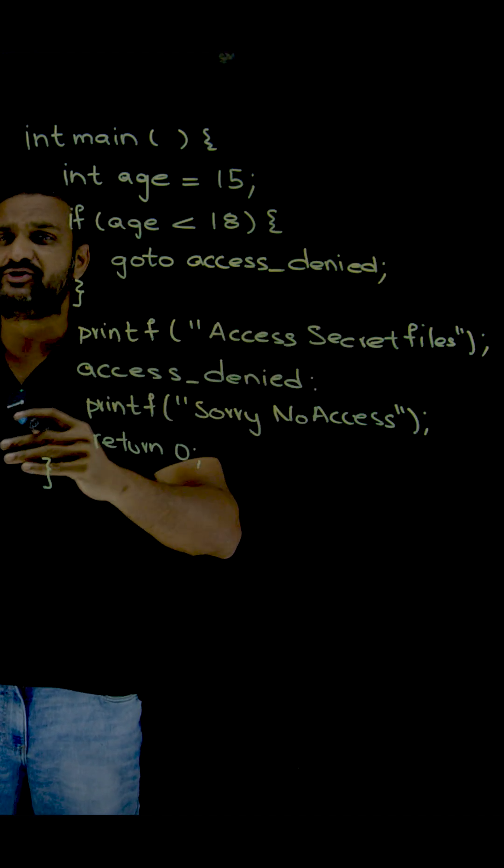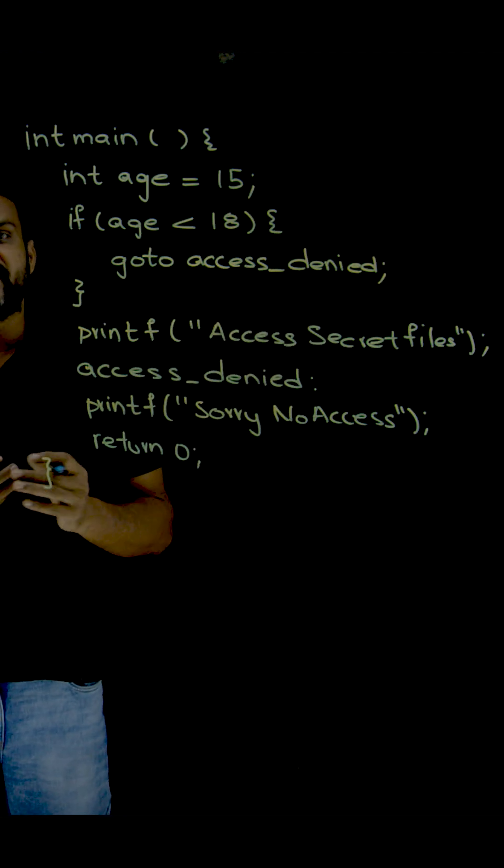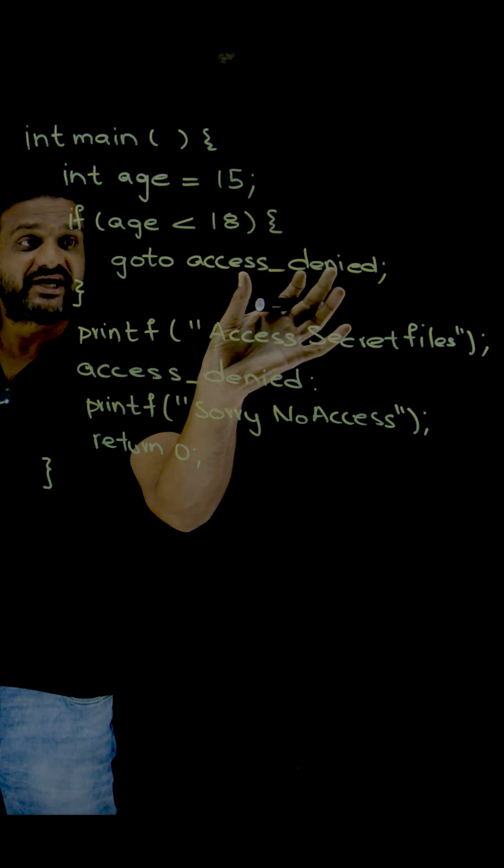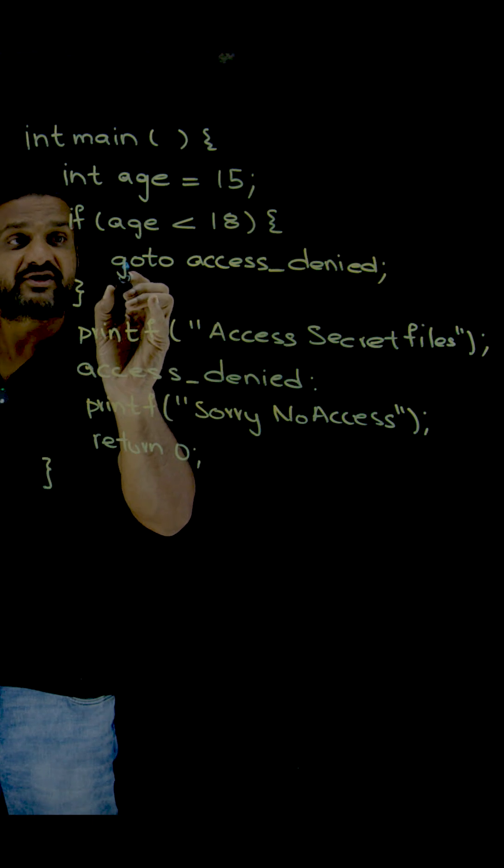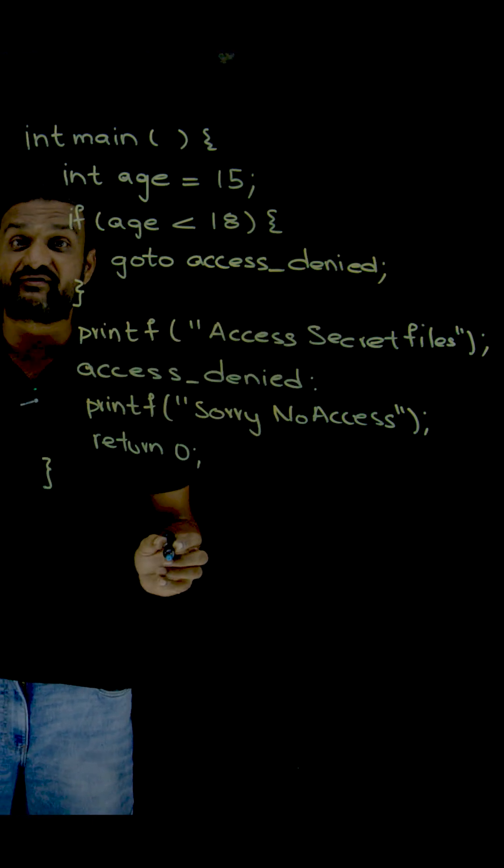You can use any name, it is just as a variable name. So this is the identifier, which means whenever this goto gets executed, shift to this identifier. The identifier usage has to be done along with this colon.